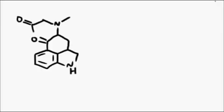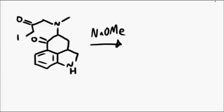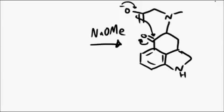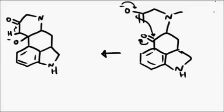This becomes important in the next step, where sodium methoxide is used to affect an intramolecular condensation. The enol is formed by the first deprotonation, and then the lower ketone group is attacked by the enolate. It deprotonates again.